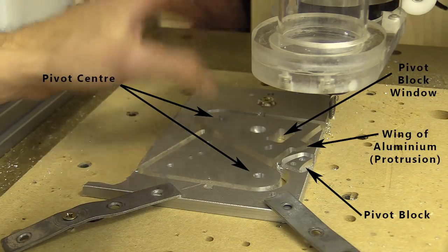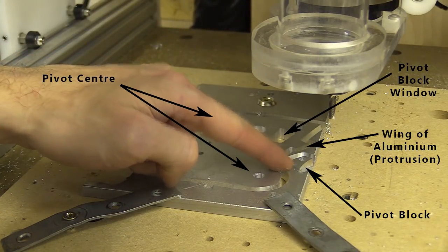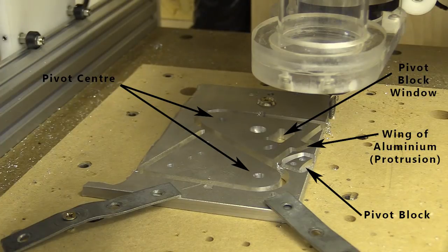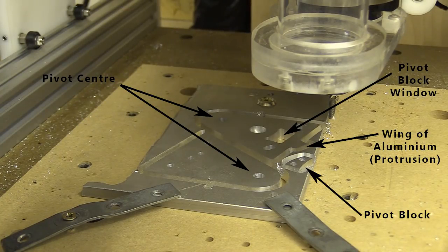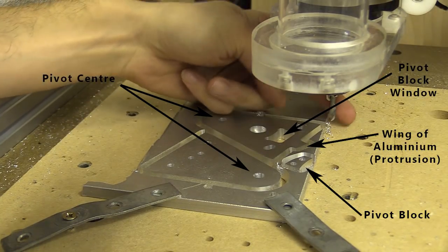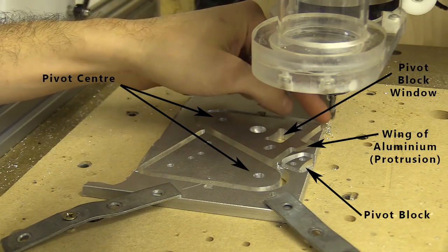The protrusion of aluminum which will be tapped for the fine adjustment screw is also off by about 1 to 1.5mm from where it should have been in relation to the pivoting window. It's a little higher and a little further away.